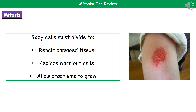Welcome to our review on mitosis. The first thing we're going to consider is why we actually need body cells to divide. There are three main reasons for this. First, if we've damaged any tissue, we need to be able to repair it. Second, if any cells have become worn out, they need to be replaced. And finally, for organisms to actually be able to grow, they need more cells — therefore those cells have to divide.